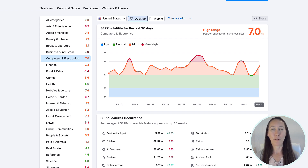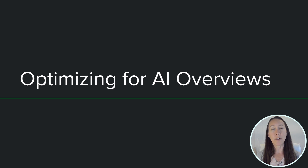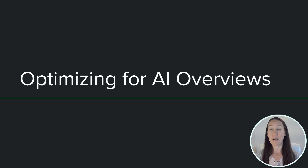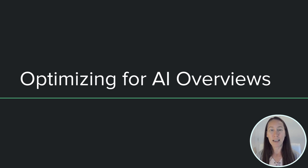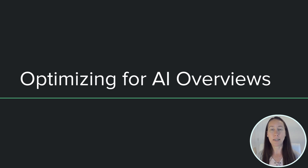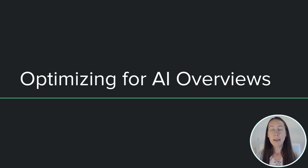While AI overviews are still being tested and will continue to evolve over time, right now we are seeing these for a lot of informational type searches, a lot of planning searches, and question-based searches. So the question is: how do you actually optimize your content to rank in these AI overviews?